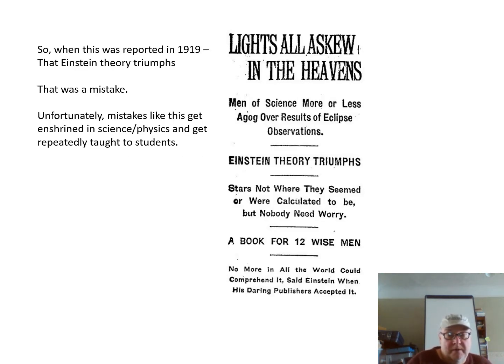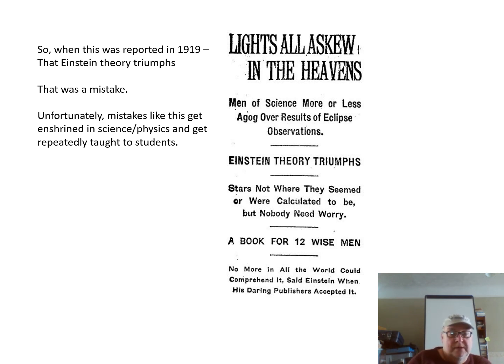The type of headline reported in 1919 read: 'Lights All Askew in the Heavens — Men of Science More or Less Agog Over Results of Eclipse — Einstein Theory Triumphs.' That was a mistake. It was reported that Einstein had defeated Newton, but that was incorrect. It was really a mistake in the calculation by Eddington — he did a calculation based upon Newtonian physics but did not take tidal force into account. So the result gets reported incorrectly in the newspapers based on Eddington's omission.